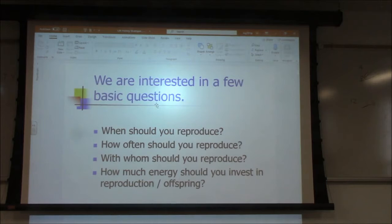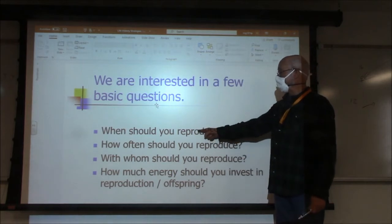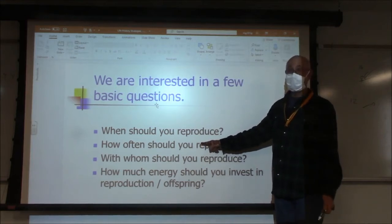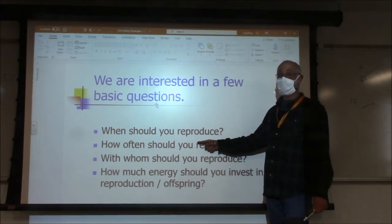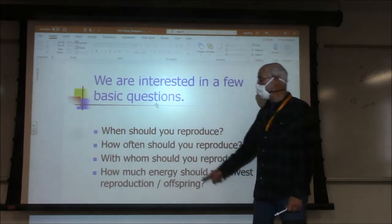You can think of piñon mice as ghetto mice — they don't have many options, living in dangerous environments. The kangaroo rats are like the Beverly Hills couple — things are smooth and easy, so they don't have to have very many offspring and can put a lot of energy into each one. That answers when and how often should you reproduce: it depends on the conditions. If things are unpredictable, reproduce very often. If things are safe and steady, you don't have to reproduce as often and can invest more in each offspring.